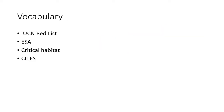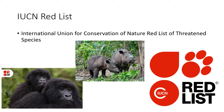The vocab is really short — there's only four things. Critical habitat does apply to the Endangered Species Act. I'm going to start with the IUCN Red List, which is not on the AP standards but I think it's important for you to know.